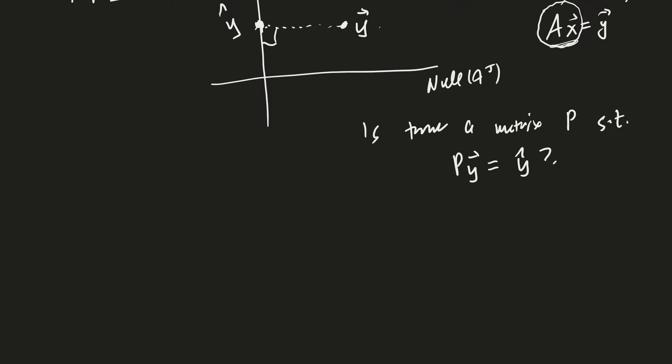Now, if the columns of A were orthonormal, then P would just be A transpose, because then A would actually be equal to the Q that we were talking about before. However, because the columns of A are not, in general, orthonormal, so normally, usually, columns are not orthonormal,